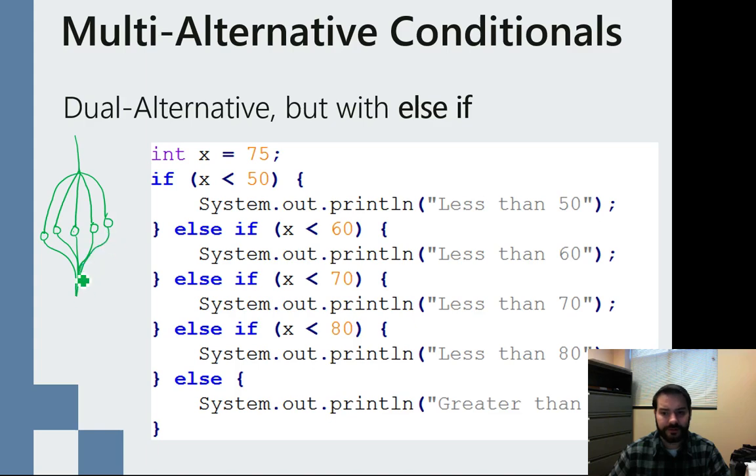And this is a little interesting because things get evaluated in order. So if we look at this again, x is equal to 75. Well, x is less than 80, but I don't just immediately go to that one. I have to look at these in order. So the first thing that happens is I go, all right, well, is x less than 50?